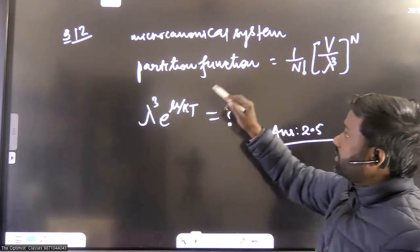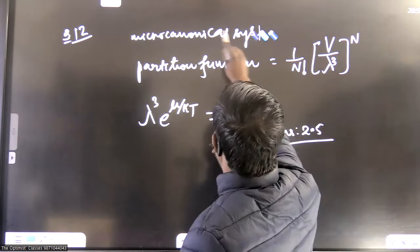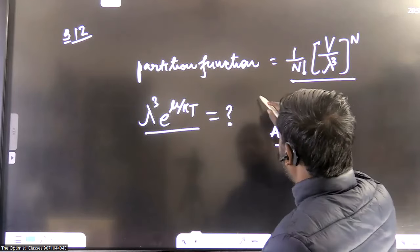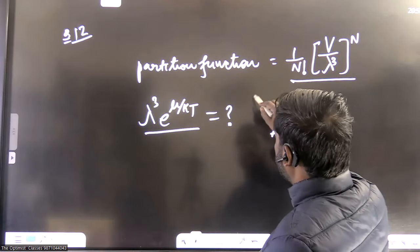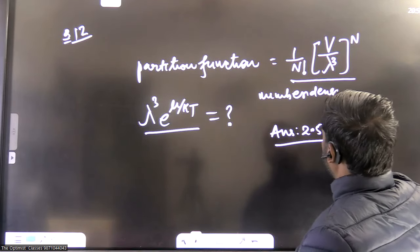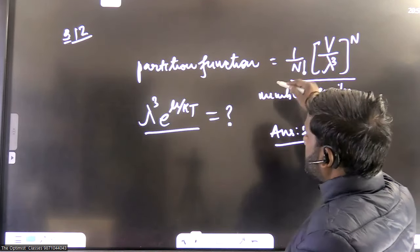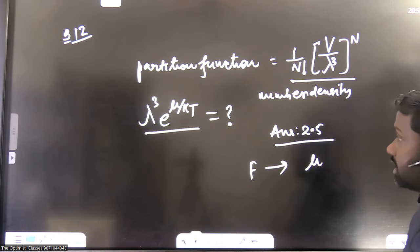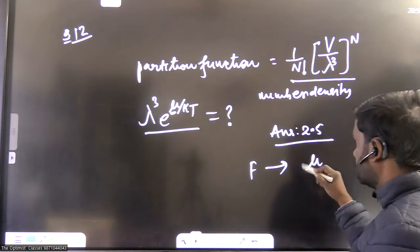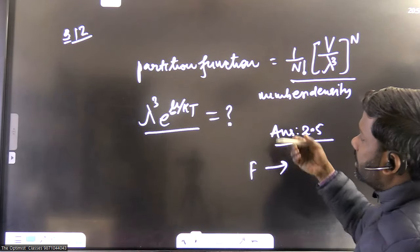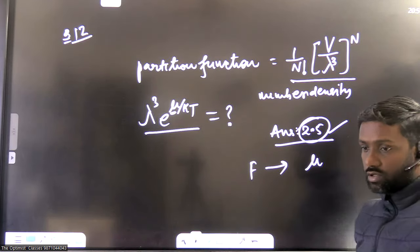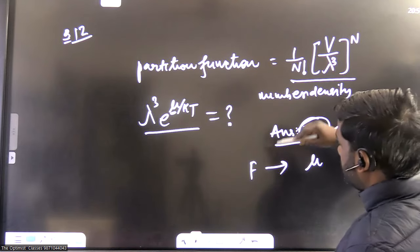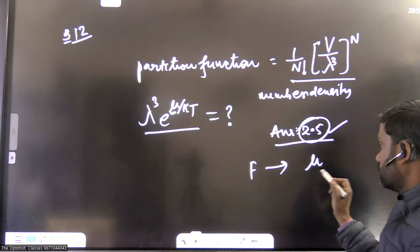This question from statistical mechanics gave a partition function and number density. From the partition function you can calculate the Helmholtz free energy F, and from F you can calculate the chemical potential. Doing this calculation gives a chemical potential answer of approximately 2.5.